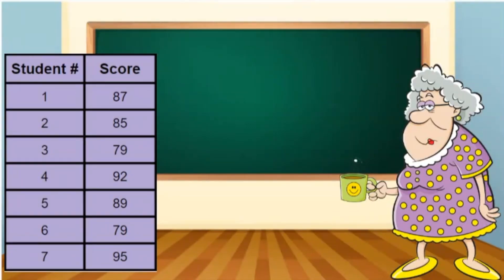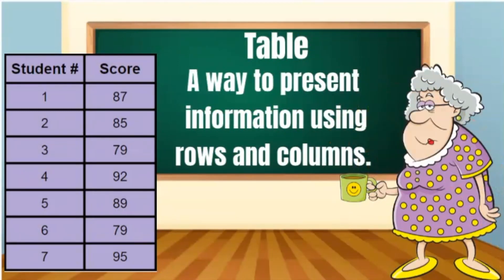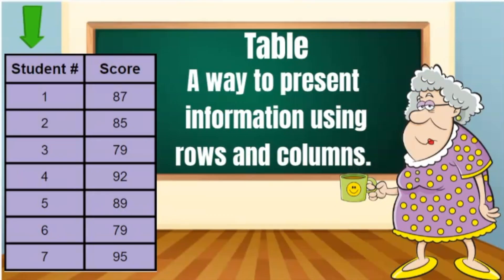I guess we have to look at the data for period 2 next. The data for period 2 is organized in a table. A table is a way to present information using rows and columns. The columns represent the student's class number and the score. The rows represent the score for each student.